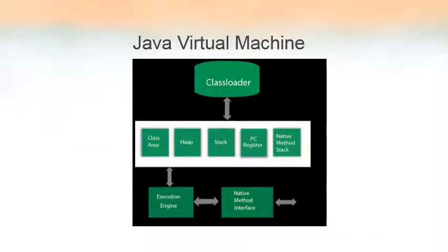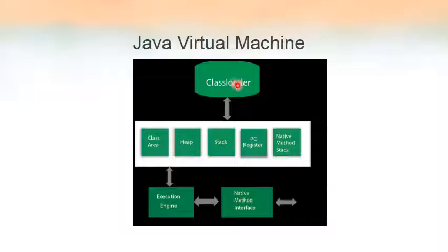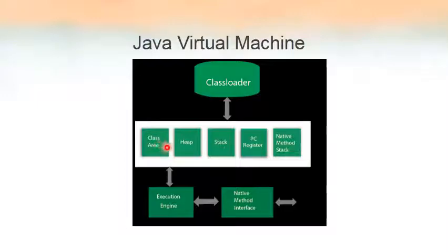Looking at the JVM architecture diagram: JVM includes a class loader that loads the class file, memory areas (heap, stack, etc.), an execution engine that executes the program, and method interfaces. Together these components make up the Java Virtual Machine.